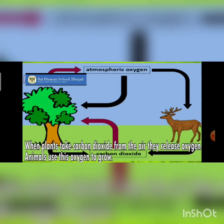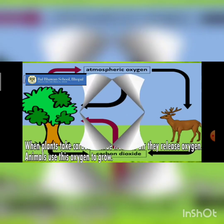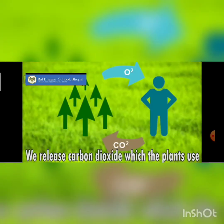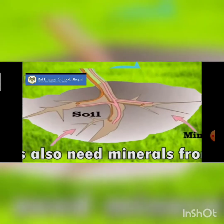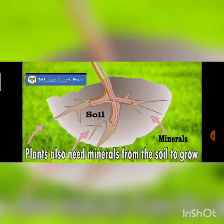oxygen is also produced by the plants, which is released through stomata. This oxygen in turn is used by animals and human beings.